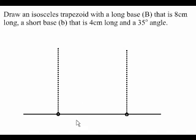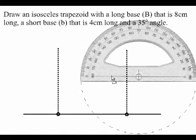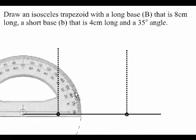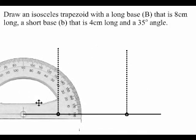The next thing to do is to draw my 35 degree angle. I'll draw a 35 degree angle at this end of the long base. This is a 35 degree angle, and the line I'm drawing is long enough because it has intercepted the dotted line I drew before.